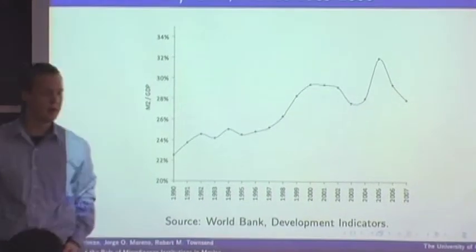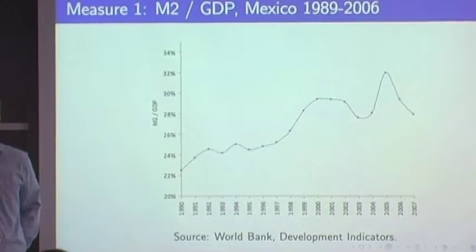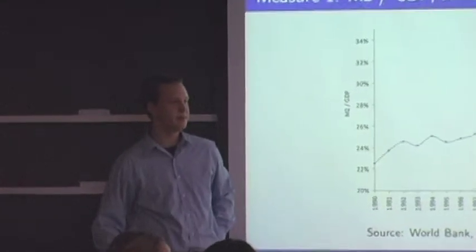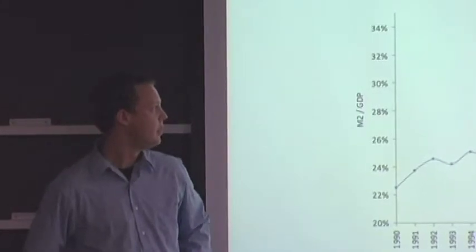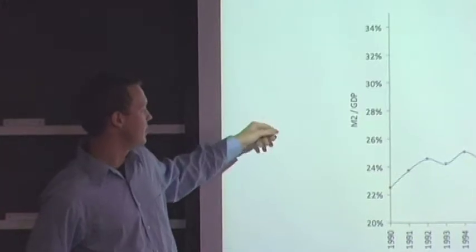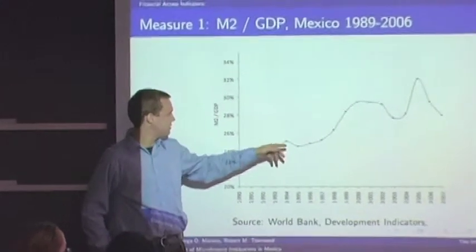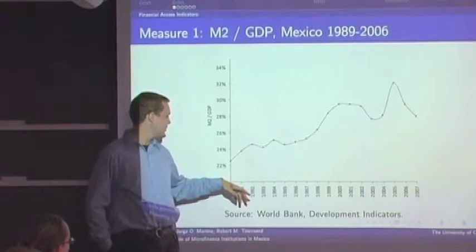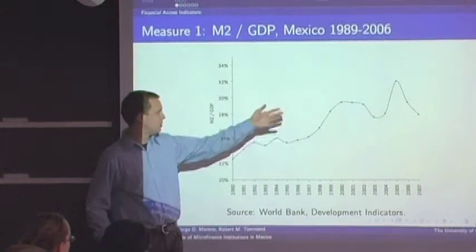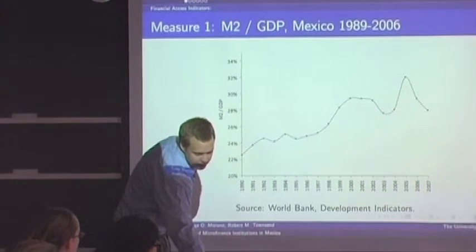Moving on from the spatial element, this is an introduction to the financial deepening story in Mexico and access to banks and financial services. Here's the first measure: M2 over GDP, which has been increasing recently, dropped slightly during the crisis, but on the whole has been moving up over the last 20 years or so.